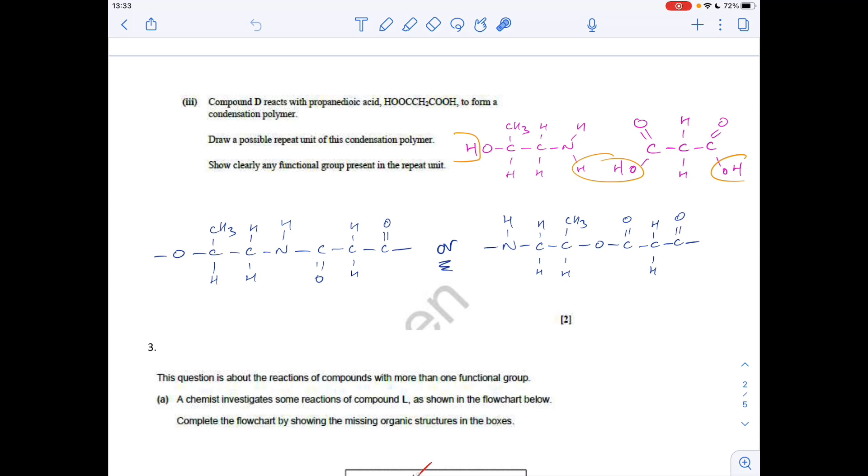So that would generate this repeat unit, the way this one's configured, or you could turn this around, so you'd have that OH group here, NH2 group on that side, which would mean it would look like that.